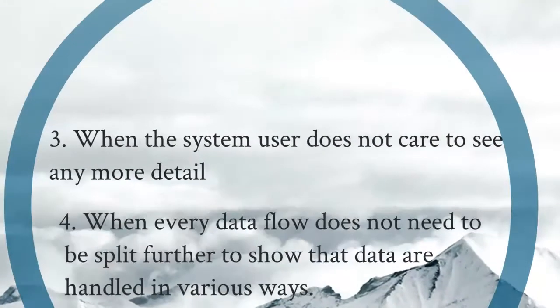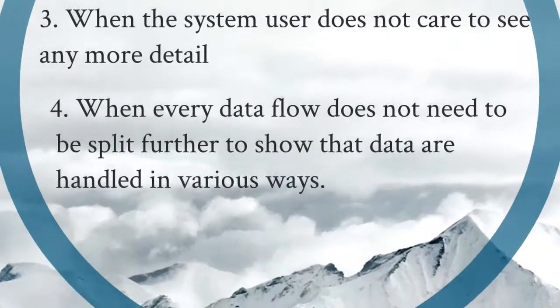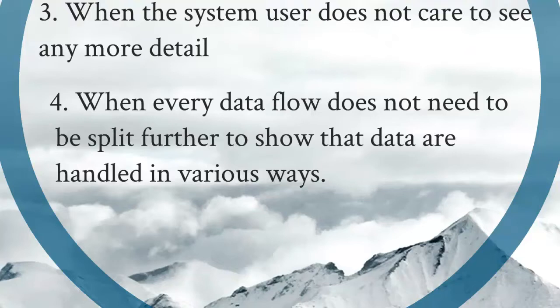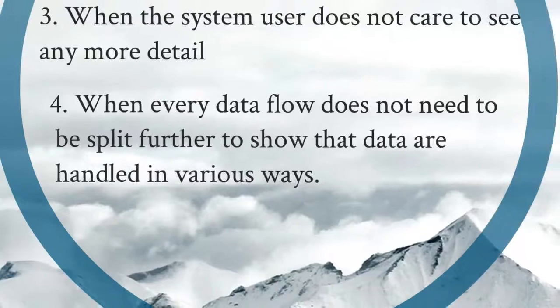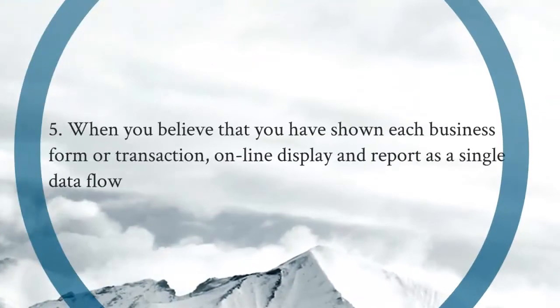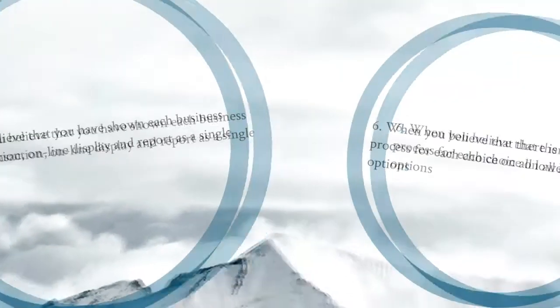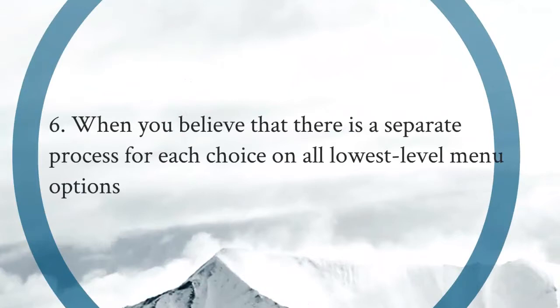Continue stopping rules: when the system user does not care to see any more detail; when every data flow does not need to be split further to show that data are handled in various ways; when you believe each business form, transaction, online display, and report appears as a single data flow; and when there is a separate process for each choice on all lowest-level menu options.